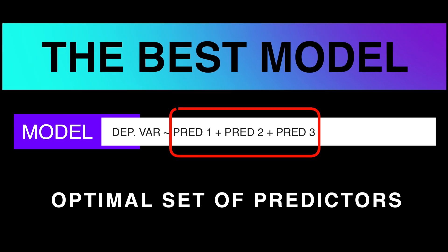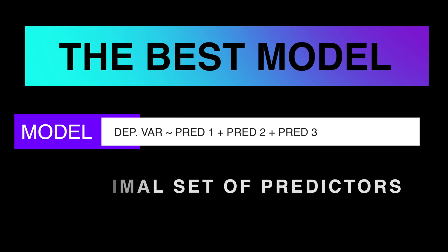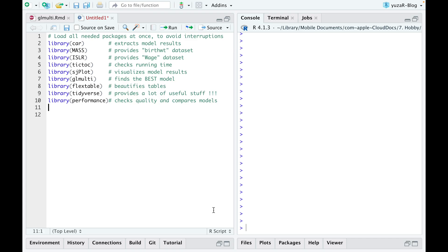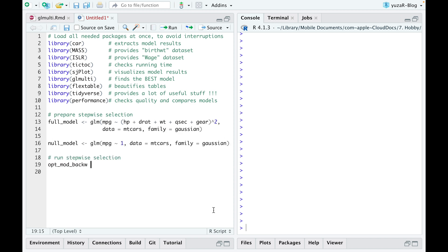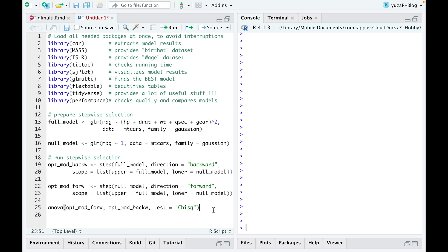Thus, we need to find the best model with an optimal set of predictors which explains maximum of our dependent variable without explaining the noise. One of the most common solutions for finding the best model is a stepwise variable selection. But it's not the best solution out there. And here is why.